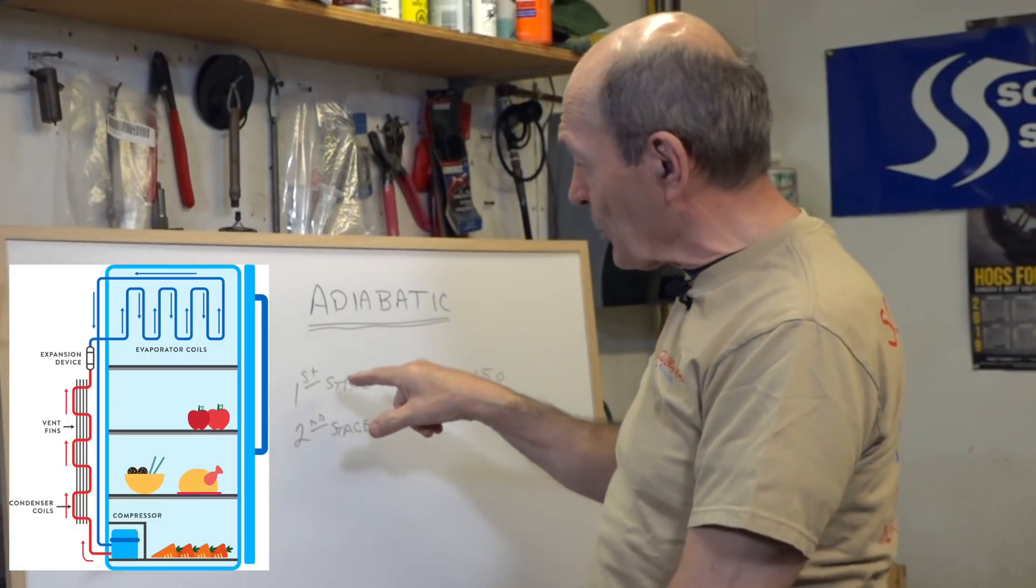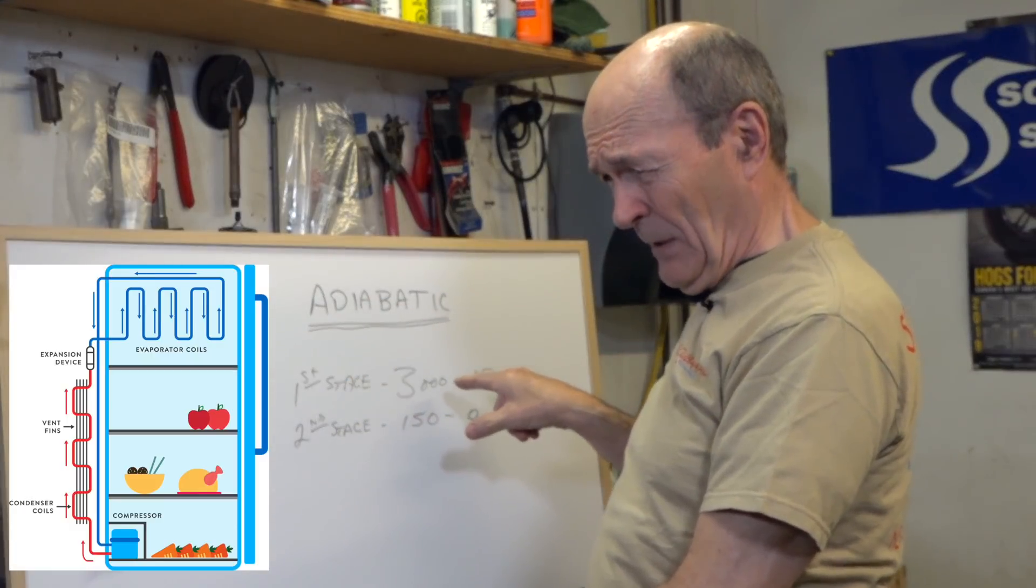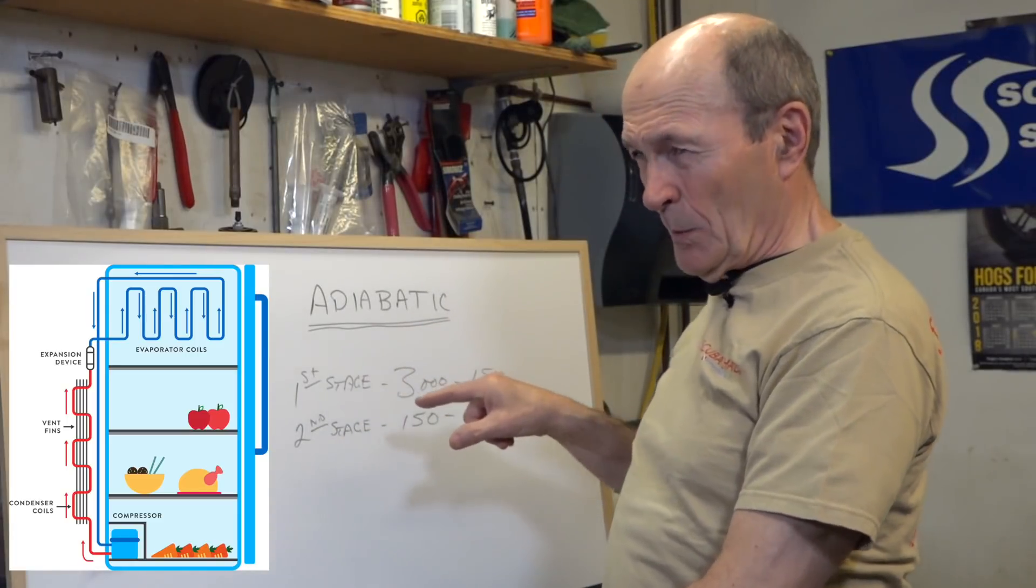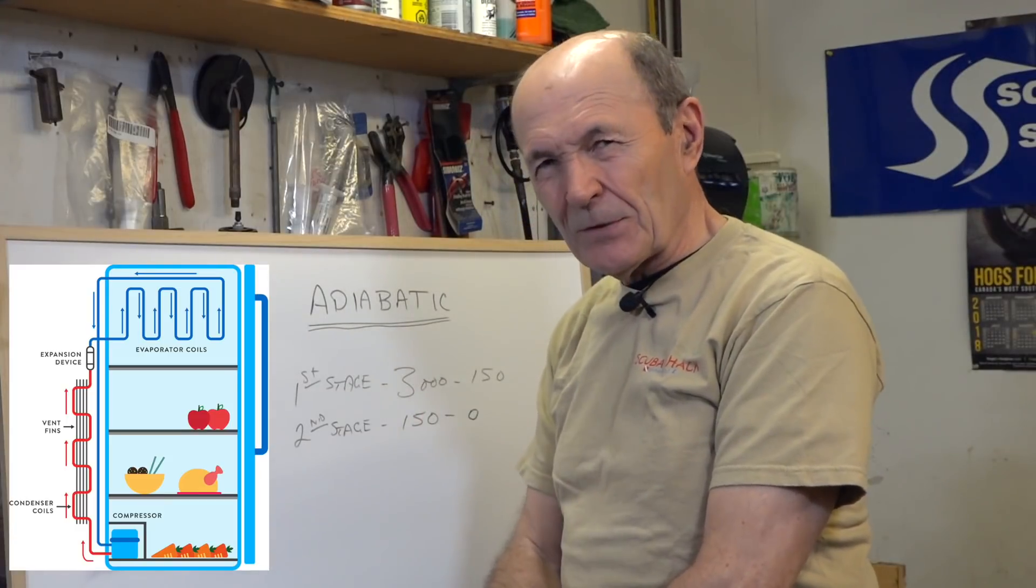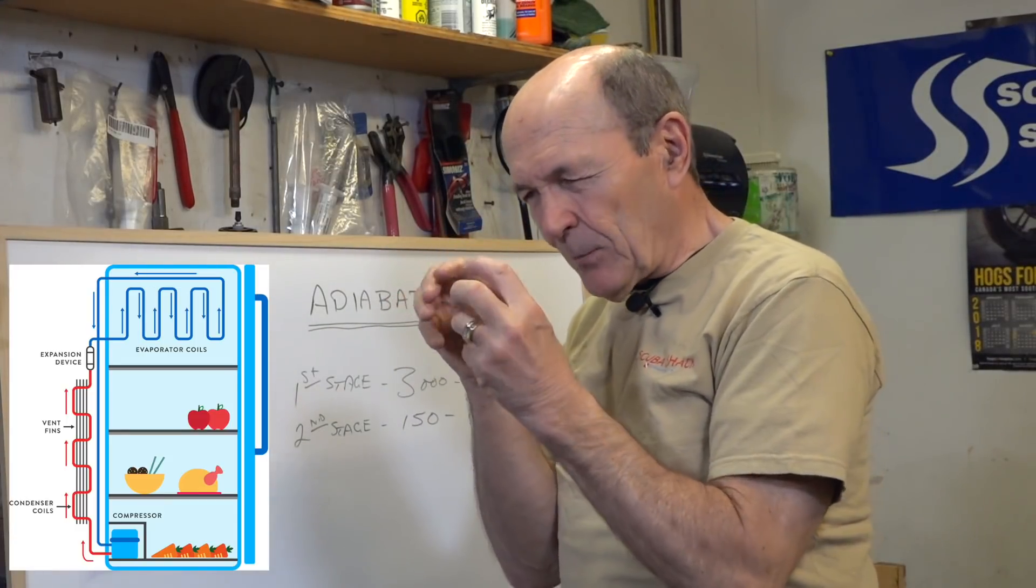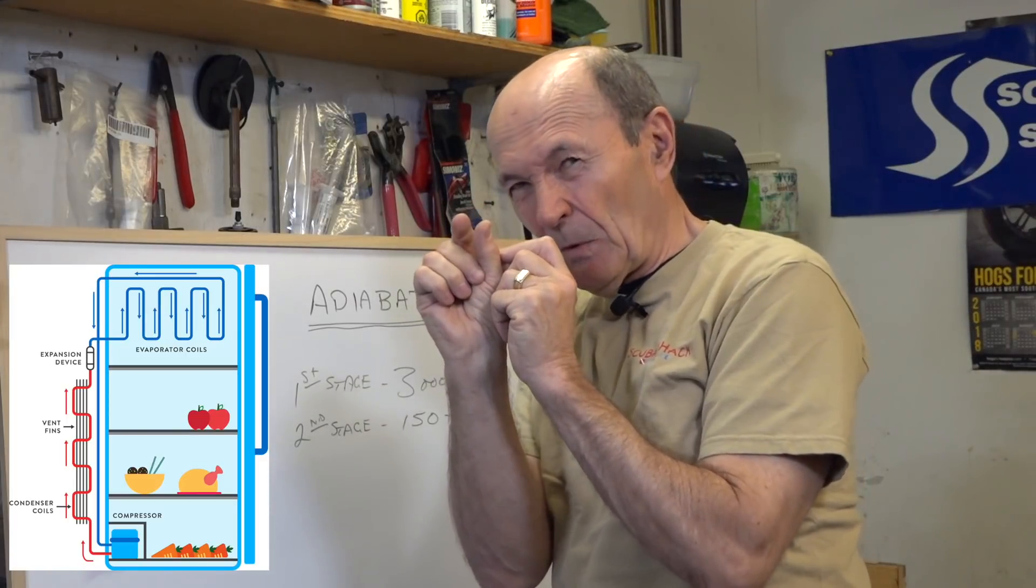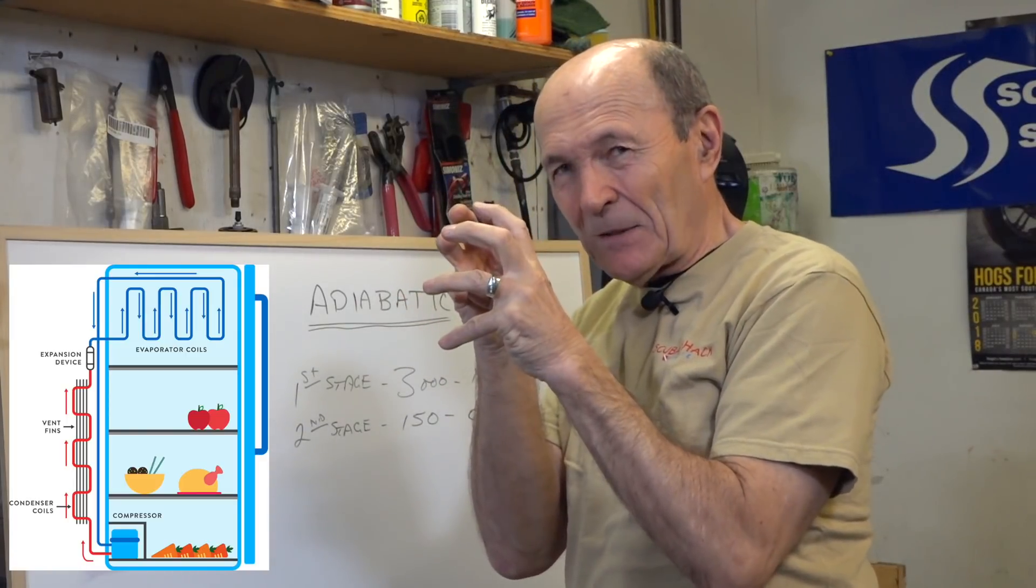In the first stage, with that sudden and considerably great pressure drop and resulting temperature drop, the air in the first stage freezes. The water in the air in the first stage freezes. Let's do that one more time. In the first stage, where the pressure drop is from 3,000 all the way down to 150, and so the subsequent temperature drop is high to low temperature, right?